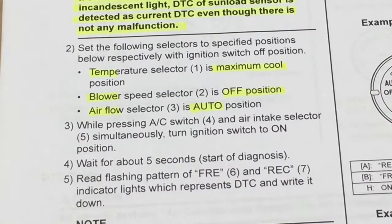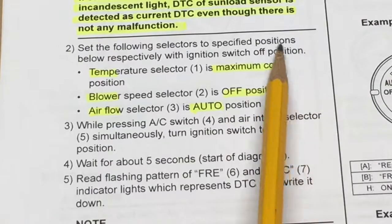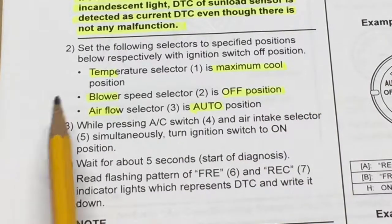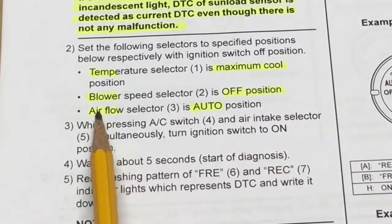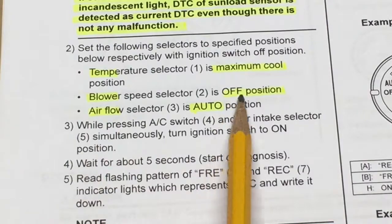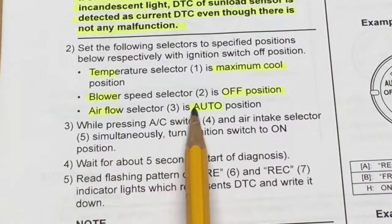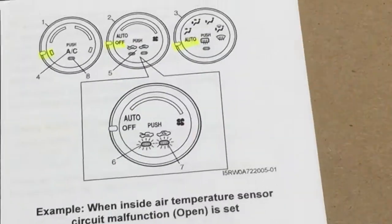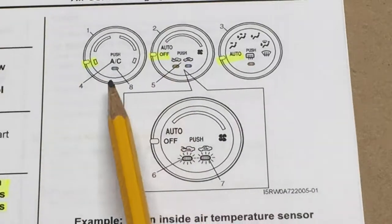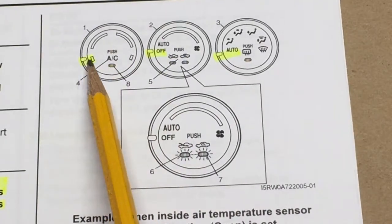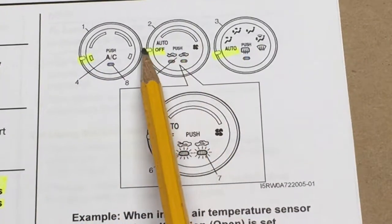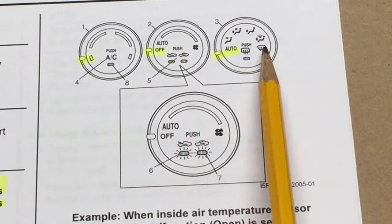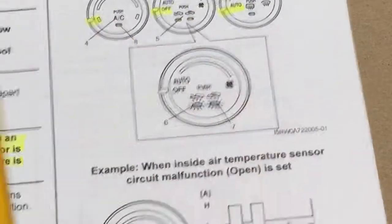Basically disregard the sun load sensor. I've seen that a couple of times on my other car when I've done an auto scan - the sun load sensor comes up on both my Grand Vitara and my Suzuki SX4, the one with the automatic air conditioning, if you don't have proper configuration. So here's the actual setup for doing the test detailed in the manual: set the following selectors with the ignition switch in the off position - temp selector to max cool, blower speed selector off, airflow selector to the auto position.